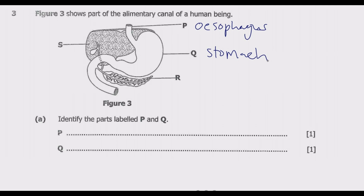R is the pancreas. You can identify it by its shape, which looks like a kind of leaf. The main functions of the pancreas can be categorized into two groups: the exocrine function and the endocrine function. Take note of those two functions.